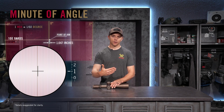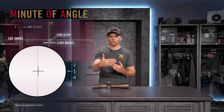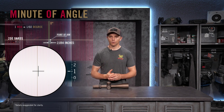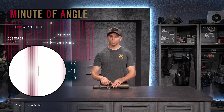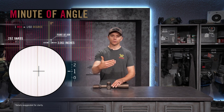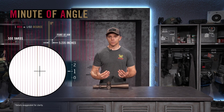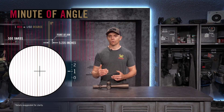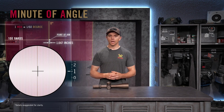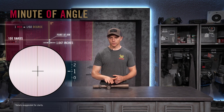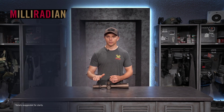Since it's an angular unit of measure, with that one minute dialed on your optic — yes, that's one inch at a hundred yards — but if you're shooting at a target at 200 yards, that same one minute equates to about two inches. At 300 yards it's three inches, and so on. For the exact measurement, take that 1.047 inches at 100 yards and multiply it by the range in hundreds.